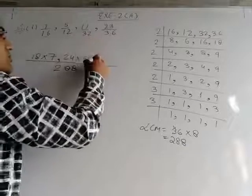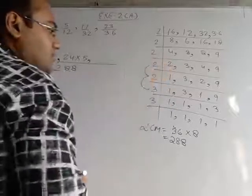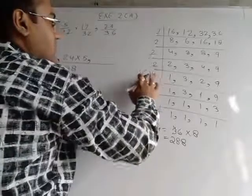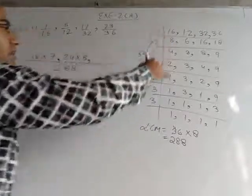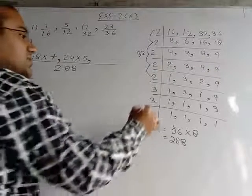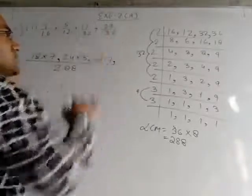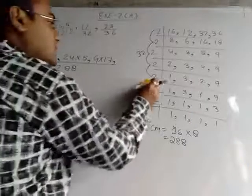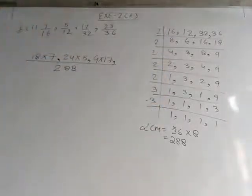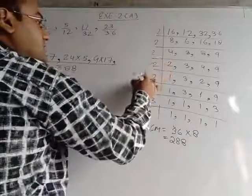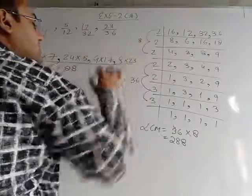For 32: we build up 32 using the prime factors, and the remaining factor is 9, so 9 × 17 = 153. For 36: we build up 36, and the remaining factor is 8, so 8 × 23 = 184. Now we have to multiply all these to get the numerators.